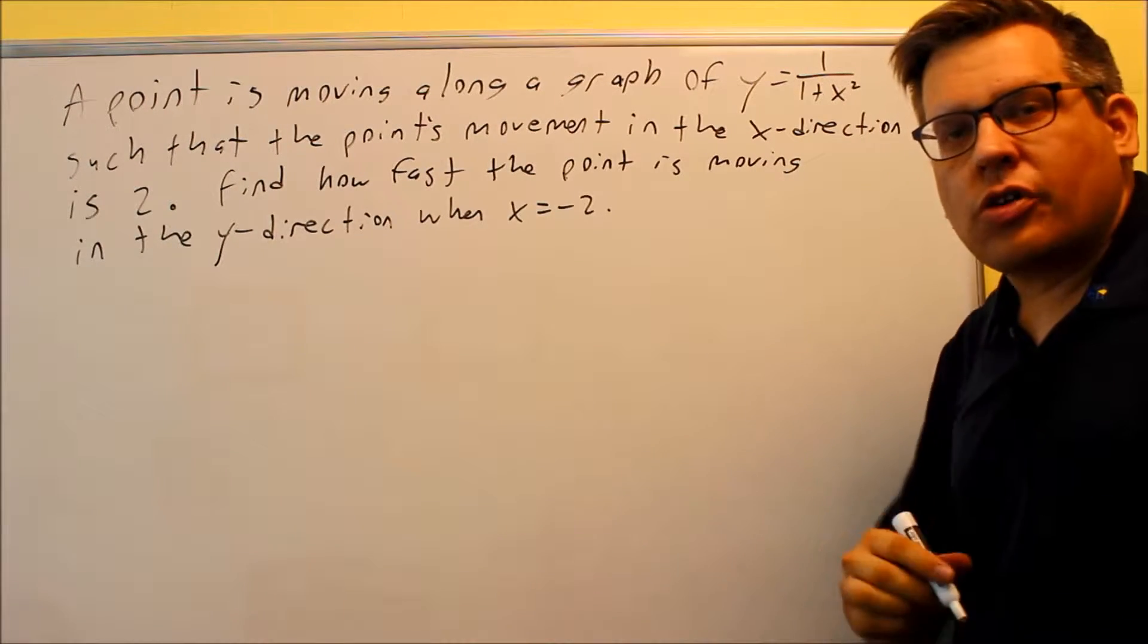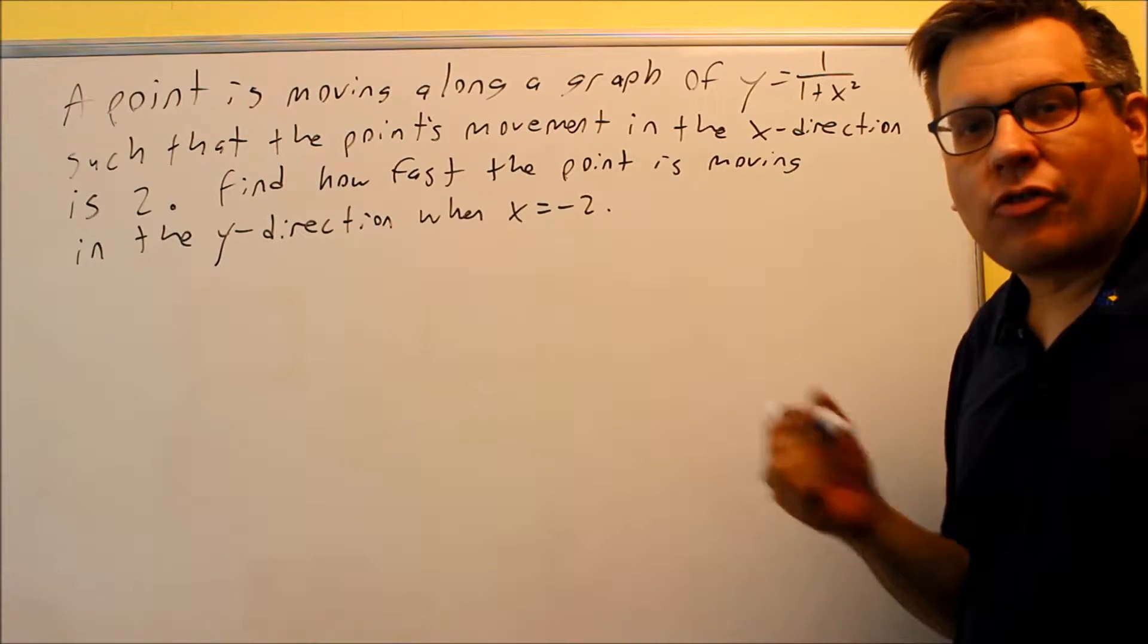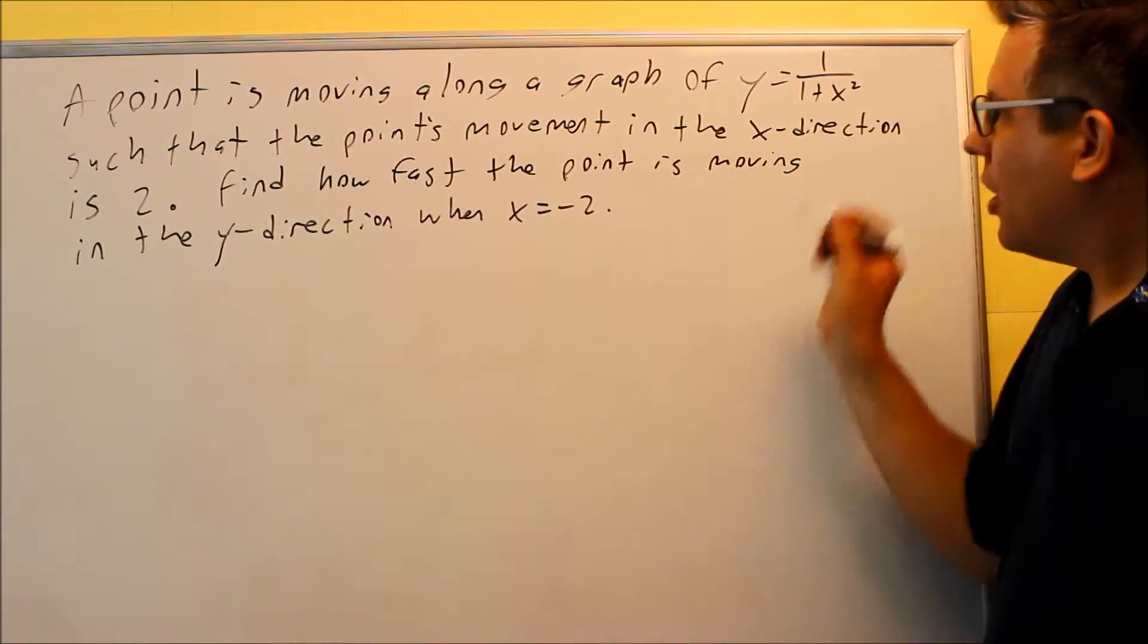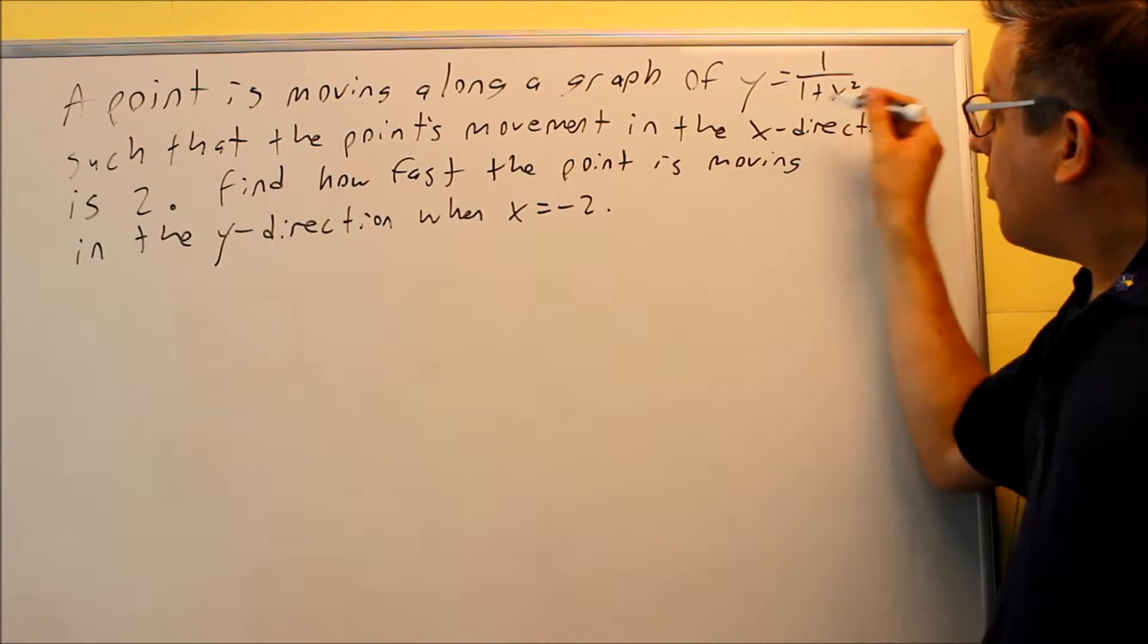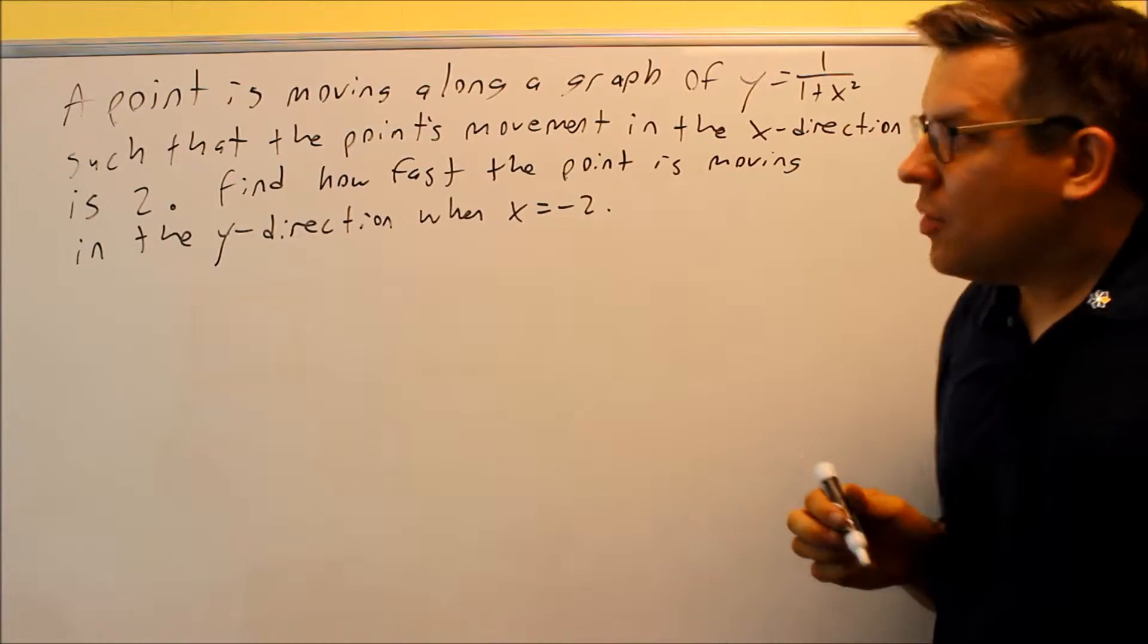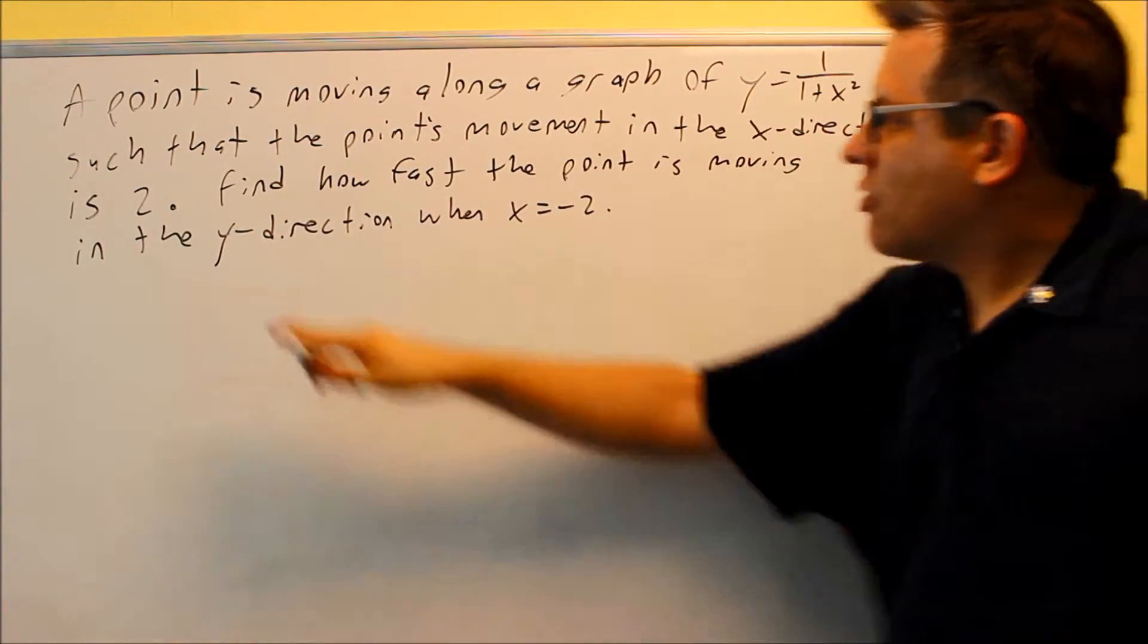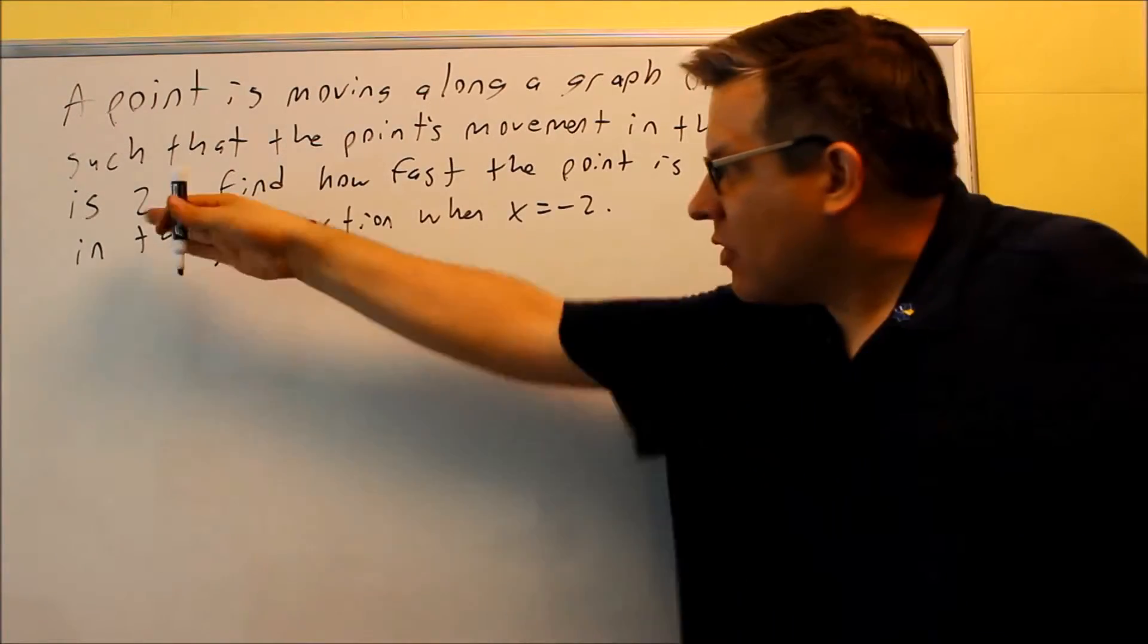So they're going to give you extra information. Maybe you're going to be doing an area or a volume, and by that you'll know which formula to use based on the information they're telling you in the problem. Maybe you might even have to use Pythagorean theorem. But in this case they gave us the equation, so we can move on because we know we're going to use that later. So it's moving along that graph such that the point's movement in the x-direction is 2.